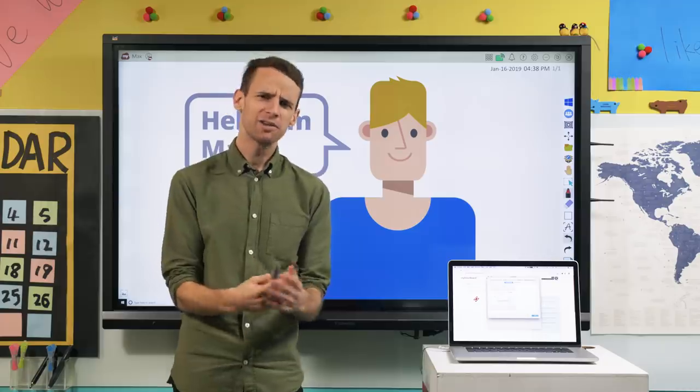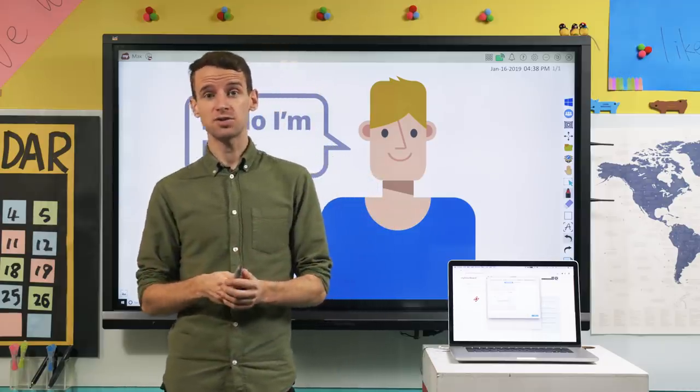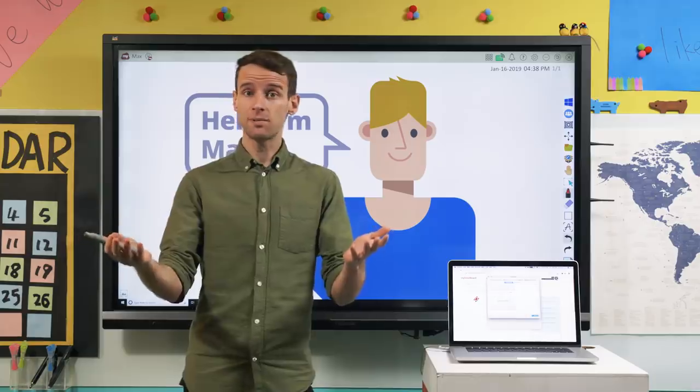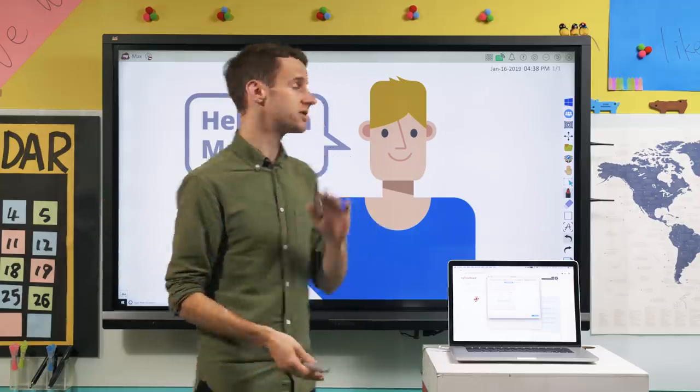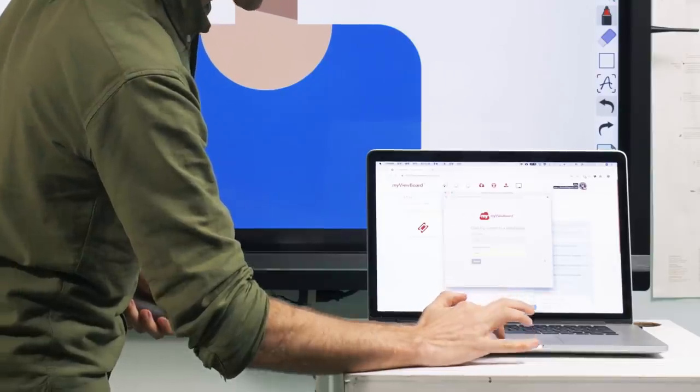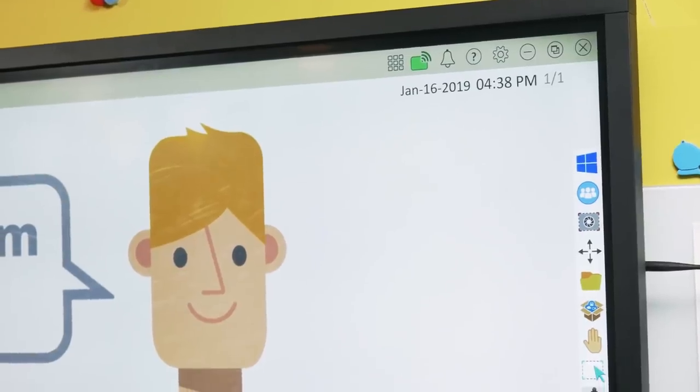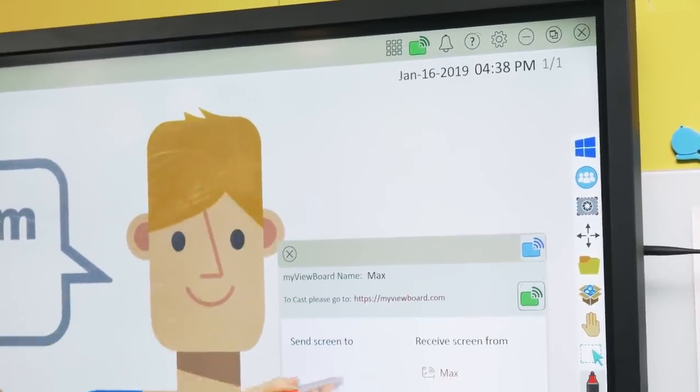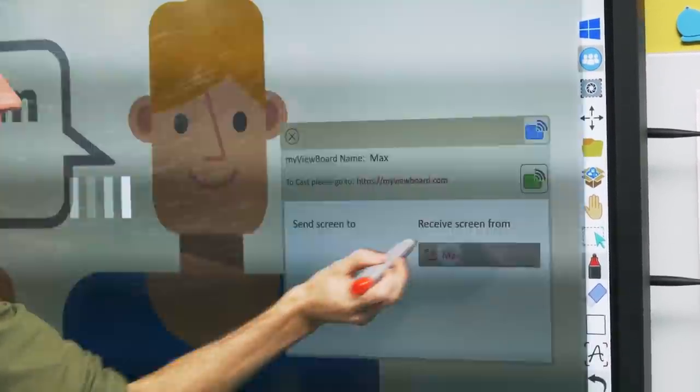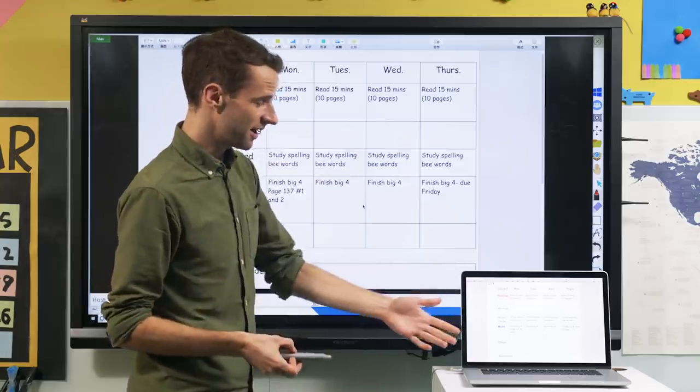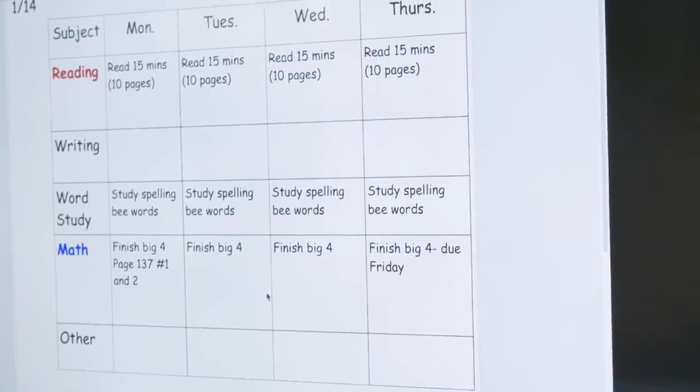This casting feature doesn't just work one way. What that means is that any students or other device users in the classroom are always going to be able to cast what's on their screen onto the ViewBoard. Just click to indicate that I want to share, then go to the same icon. And now you can see what's on this device has been cast onto the ViewBoard.